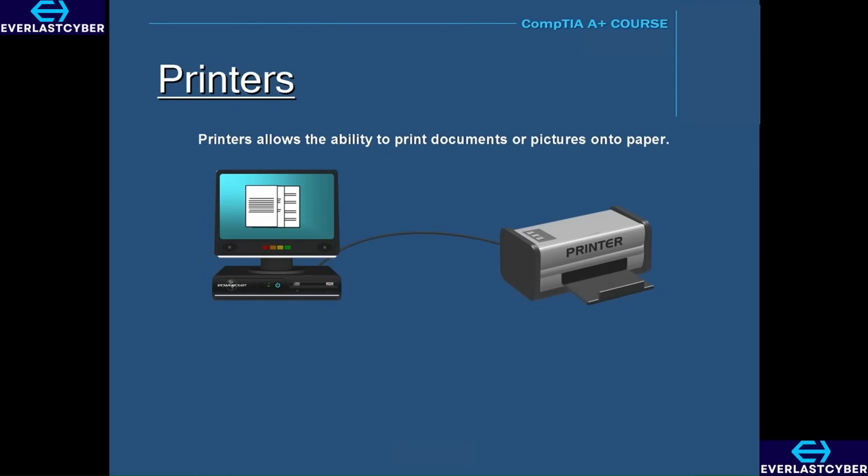Printers allow the ability to print copies of documents or pictures onto paper from a computer. There are several different ways that a computer can connect to a printer. The most common way is by using a USB or parallel cable. This is known as a local connection because the printer is directly connected to the computer.